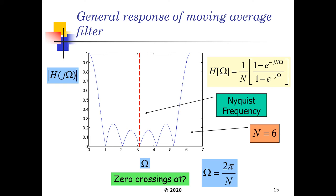If we put it down to having the generic or general response of any moving average filter with respect to N, we basically see that the Nyquist frequency is always going to be at the center point, no matter what. So in this case, if N was equal to 6, the Nyquist frequency is around 3. And the zero crossings are always going to be on 2 pi divided by N.